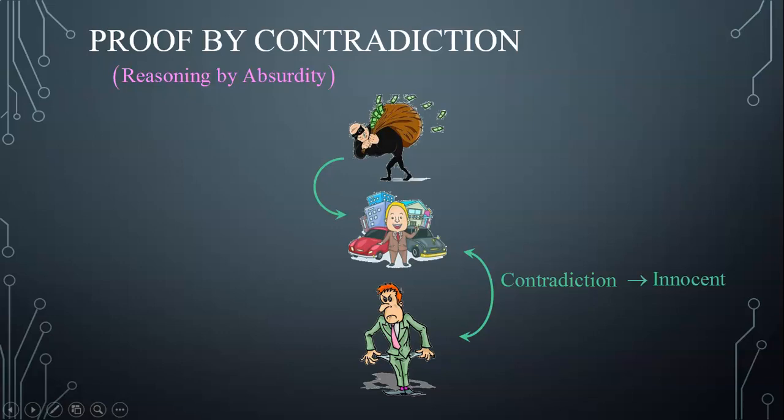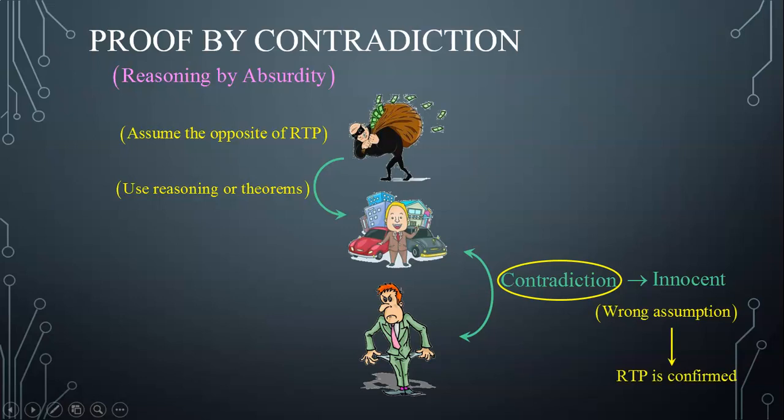Then, in a proof by contradiction, I start by assuming the opposite of what is required to prove. Then, using reasoning or theorems, I reach a contradiction. A contradiction implies a wrong assumption. Since my assumption is wrong, then what is required to prove is actually confirmed.